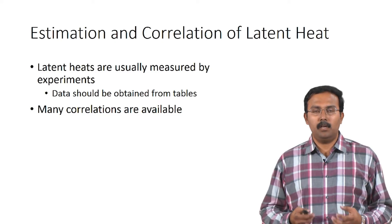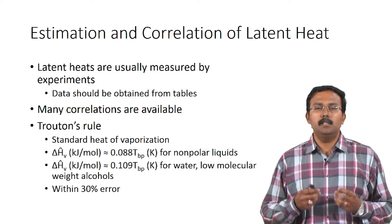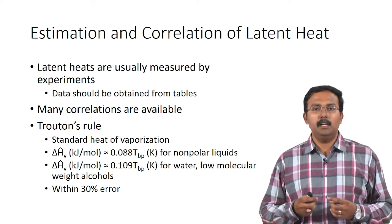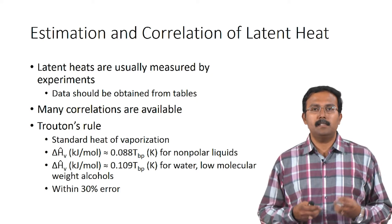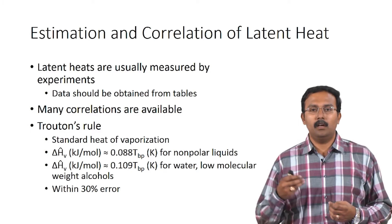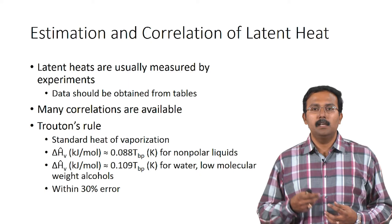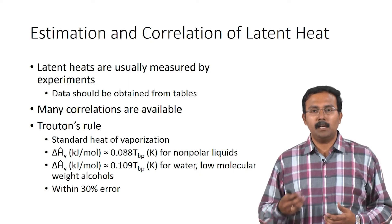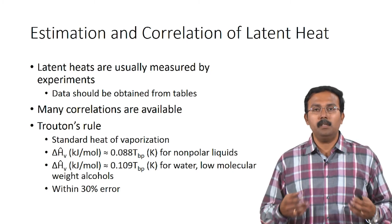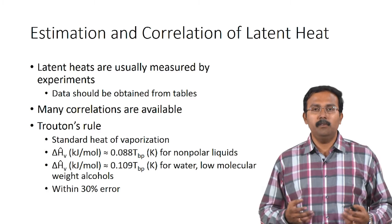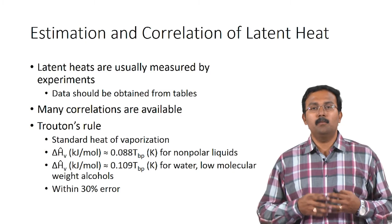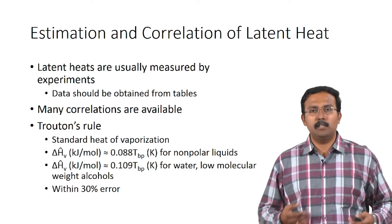The first and simplest correlation that can be used is Trouton's rule, which is used for estimating the standard heat of vaporization. The heat of vaporization for nonpolar liquids can be given as 0.088 times the boiling point, and for water and lower molecular weight alcohols it can be calculated as 0.109 times the boiling point. The boiling point temperature must be in Kelvin, and this gives the heat of vaporization within about 30% error. So this is not the most accurate method, but it is the simplest to use.